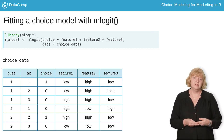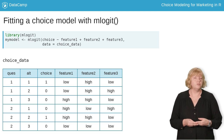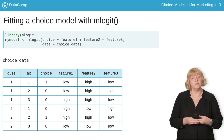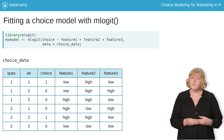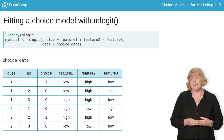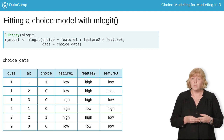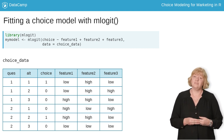Under the hood, the model that we fit with mLogit is different than the linear model that we fit with lm. For right now, we're going to skip over the details of how they're different, but we'll come back to that in Chapter 3.